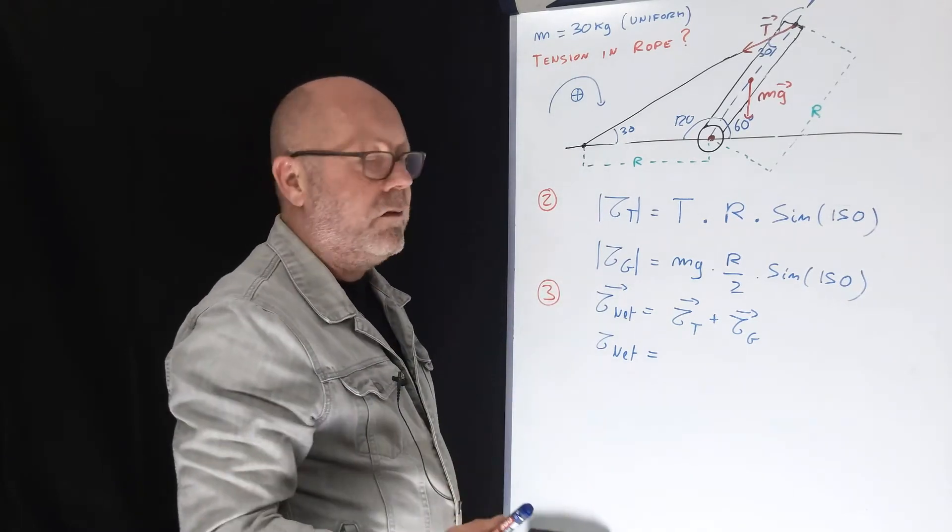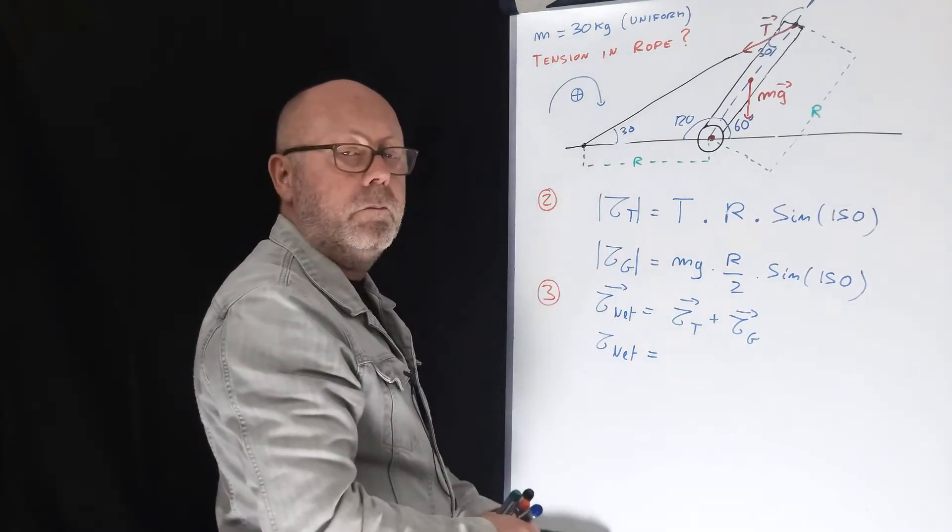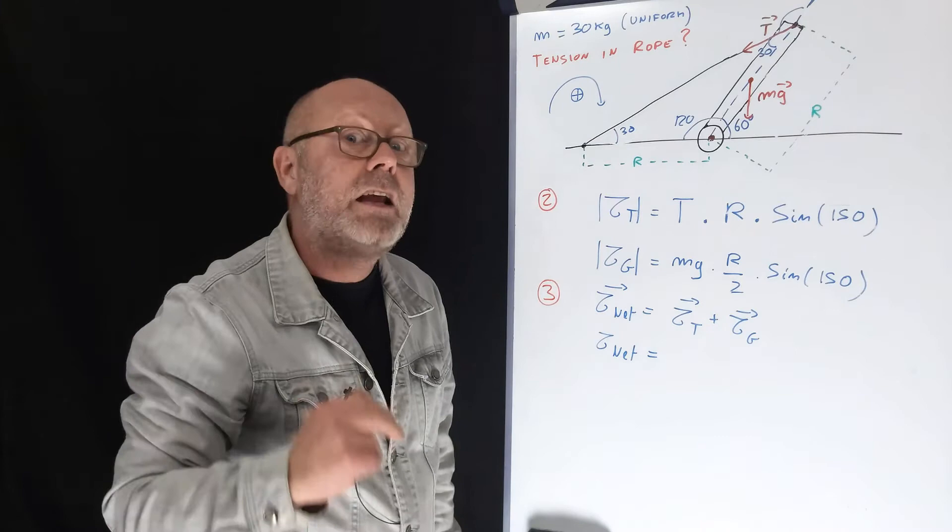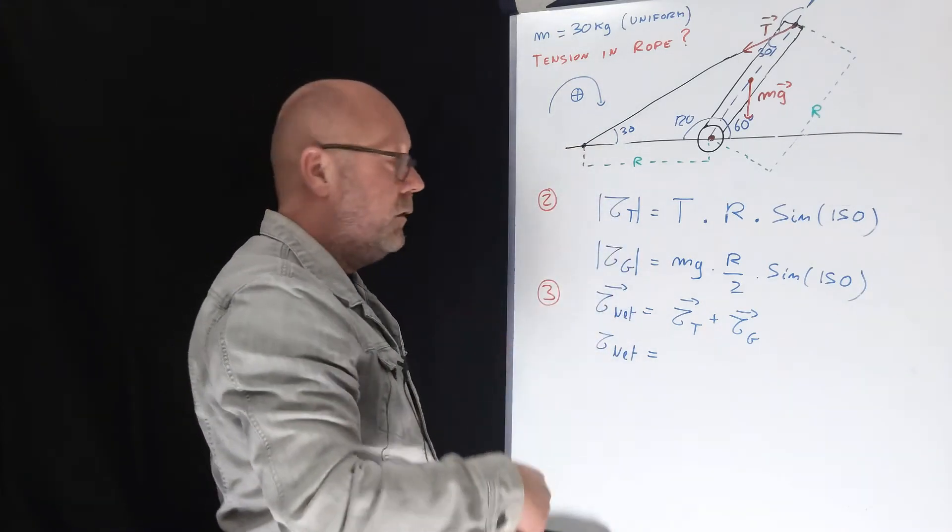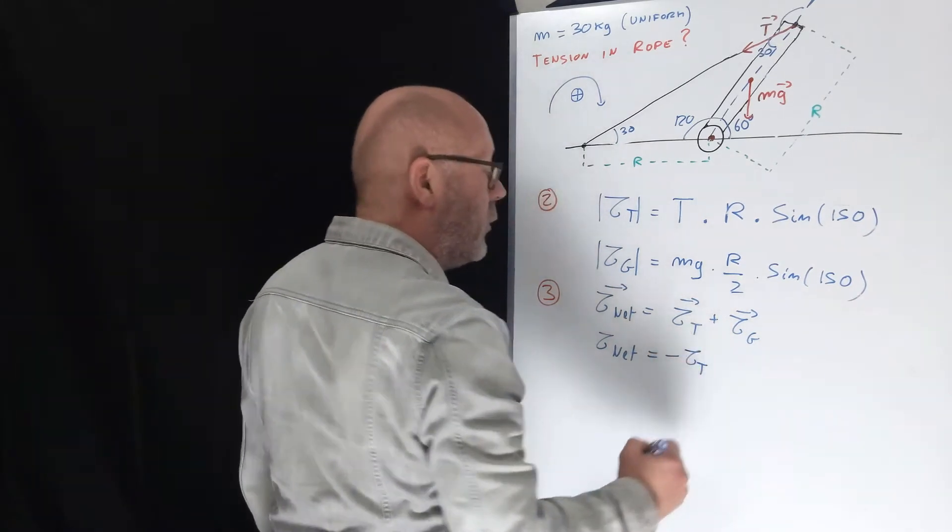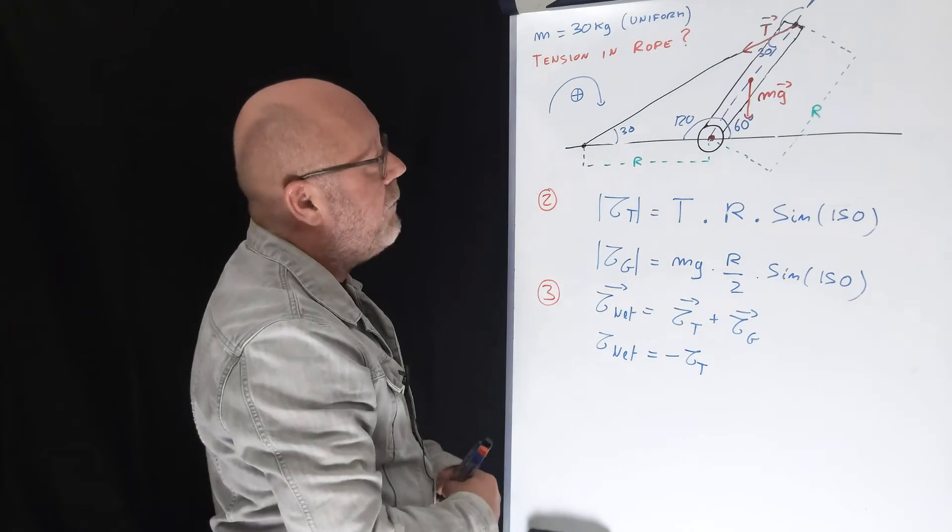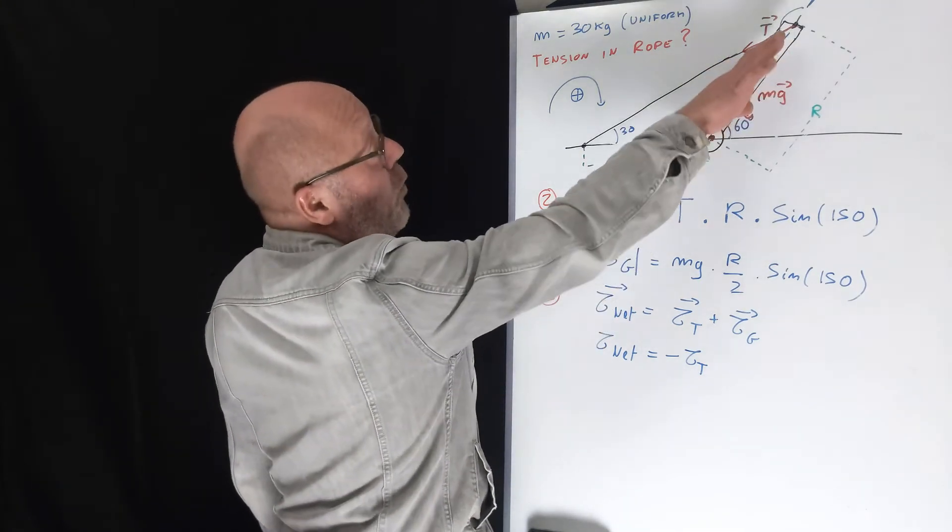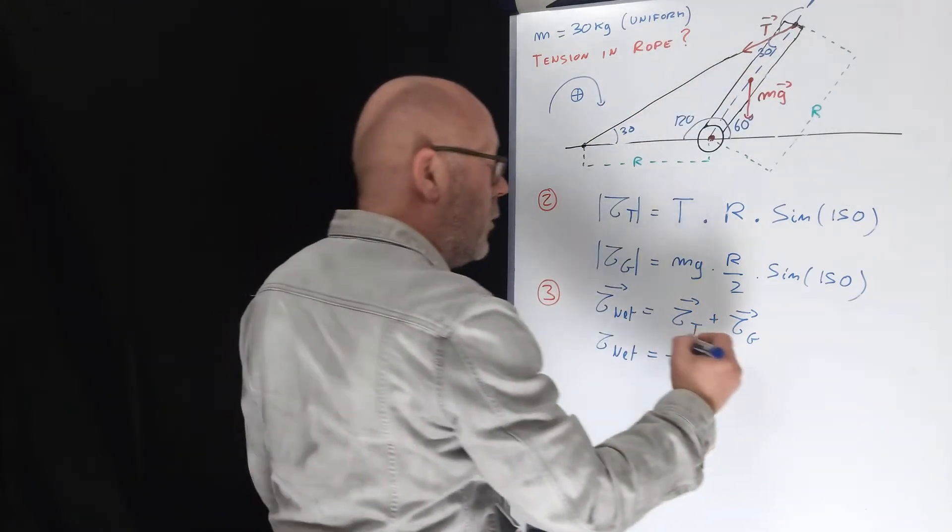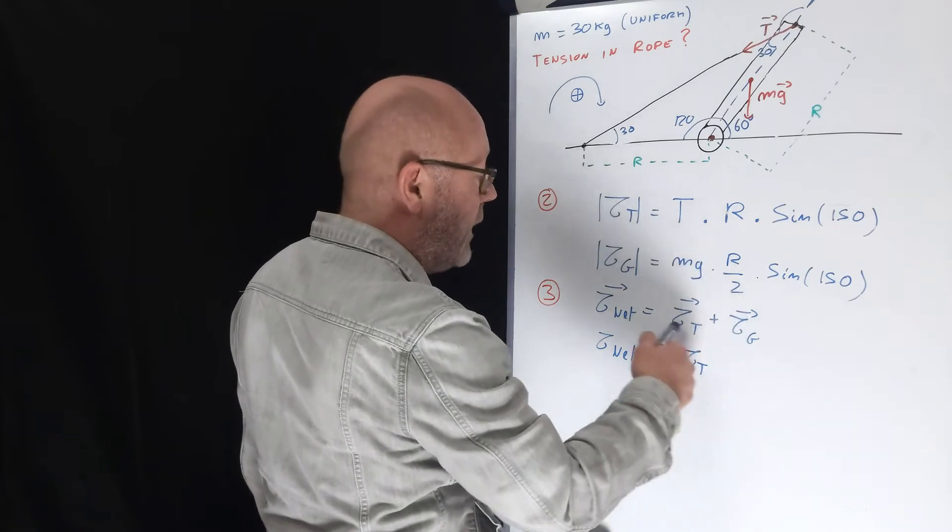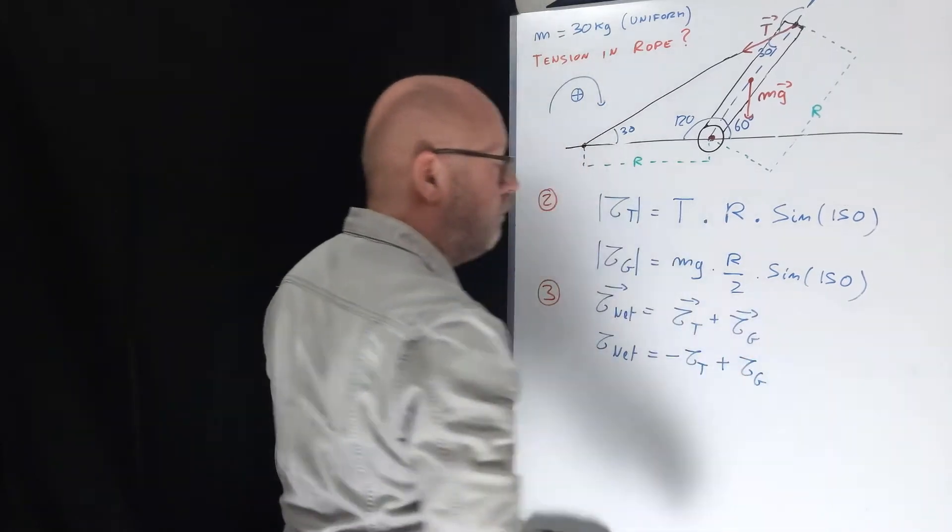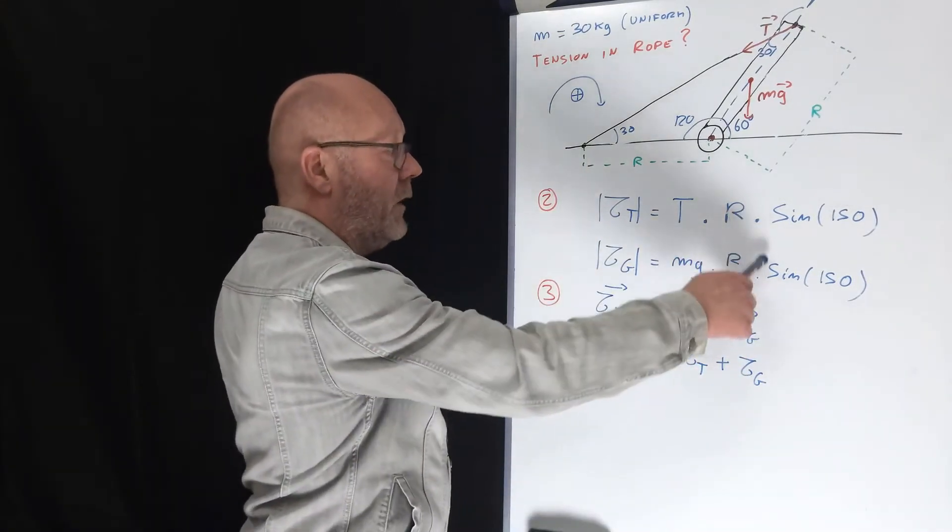Now let's define the magnitude of the net torque. Imagine there would be only tension involved. What would the plank do? It would be pulled back, so it would rotate that way, meaning it would be rotating in the negative direction of the rotation. That's why we write this as minus the magnitude of the torque of the tension. What about gravity? Gravity would pull down the plank, therefore making it rotate in the positive direction. So the vector of gravity torque translates as a magnitude as plus Tor g. Now we can put our expression of the magnitude in here.